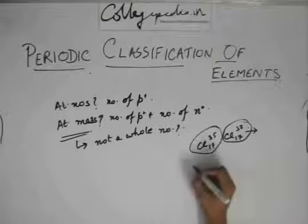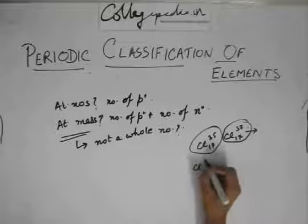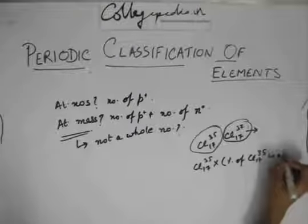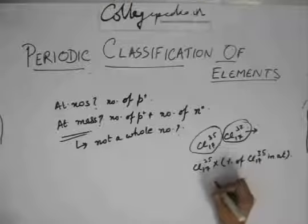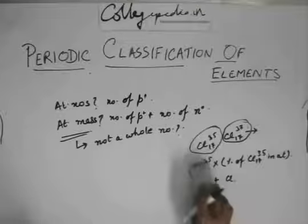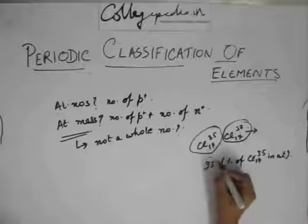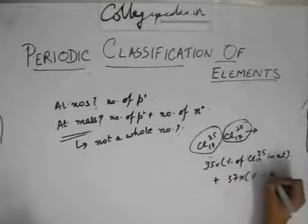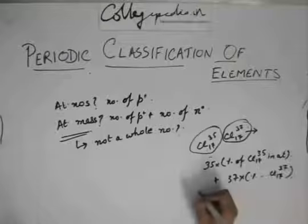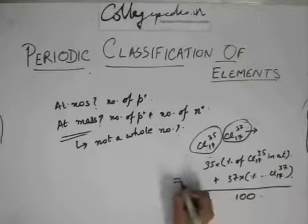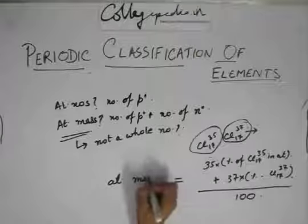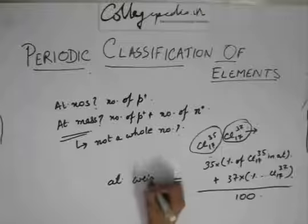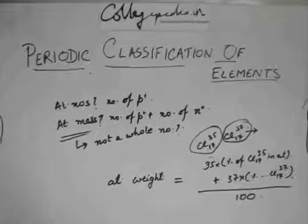So how can you say that this is the chlorine whose atomic mass will be taken? So that is why what we do is that we have a formula with chlorine 35 into the percentage of chlorine 35 in atmosphere plus 37 into percentage of chlorine 37 in atmosphere. This divided by 100 will give you the atomic mass, or rather we can say atomic weight, because now it no longer remains mass, it becomes atomic weight. It is just a kind of weighted mean.